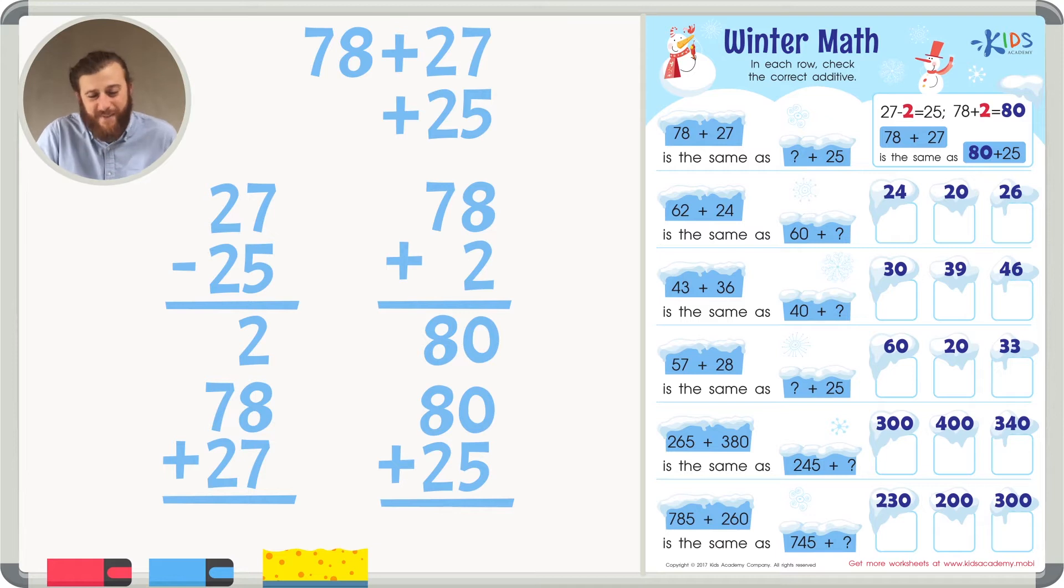You see, in 80 plus 25, 0 plus 5 is 5. That's really easy. In 8 plus 2, 8, 9, 10, that's 10, which makes our answer 105.